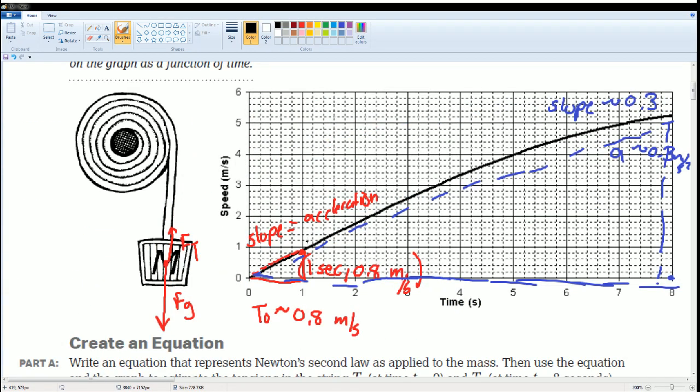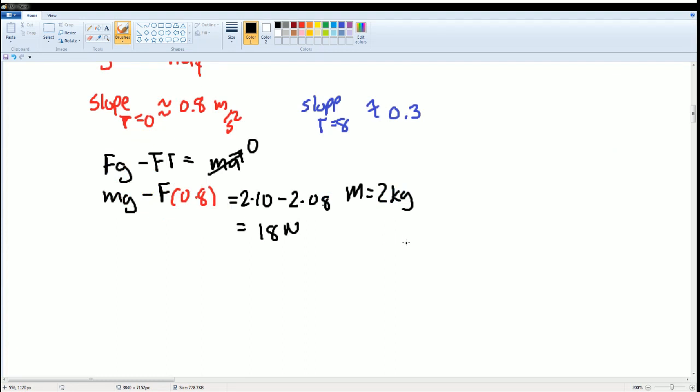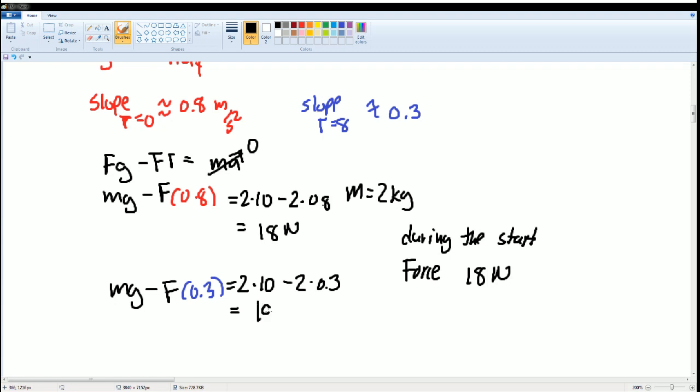So during the start, the force is roughly around 18 newtons that's being pulled. Next, it was MG minus F and the new force at the end was around 0.3. So that was equal to 2 times 10 minus 2 times 0.3. And this is roughly around 19 newtons. This is at the end, the force was 19 newtons. That makes sense.